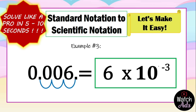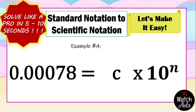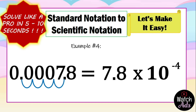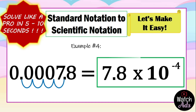Our final answer is six multiplied by 10 raised to negative three. Let's have another example: 0.00078 in scientific notation. It's obvious this number is less than one, so our exponent is negative. We find the first non-zero digit — that is seven. We put the second decimal point to the right of seven, then count the digits in between: we have four digits, so our exponent is negative four. We drop all zeros and retain the non-zero digits: 7.8 — that is our coefficient. Final answer: 7.8 multiplied by 10 raised to negative four.